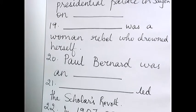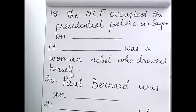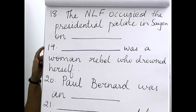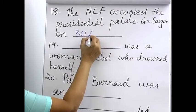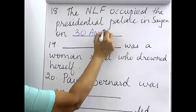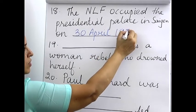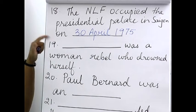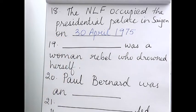Eighteenth: the NLF occupied the presidential palace in Saigon on a specific date. If they ask 'in' which year, you write the year directly. But when you see the word 'on,' you write: on 30th April 1975.